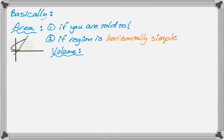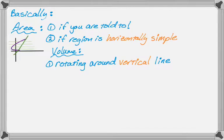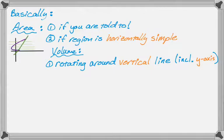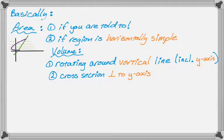You might also be dealing with volume. For volume there are two scenarios. One, you can use dy if you're rotating around a vertical line — and that includes the y-axis, which is probably the most common vertical line you'd rotate around. The second reason you would use dy is if the cross sections are perpendicular to the y-axis. So those are the times you're going to use dy.